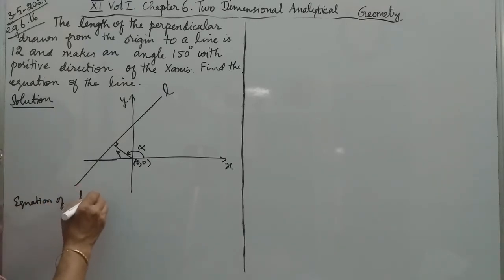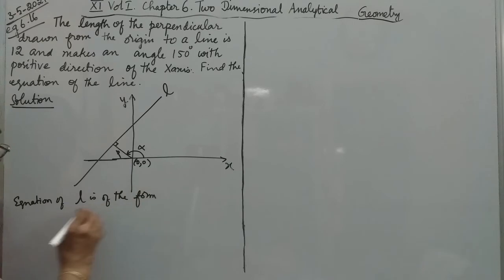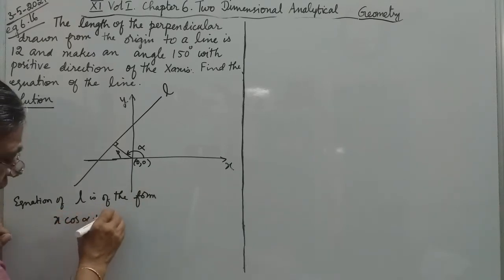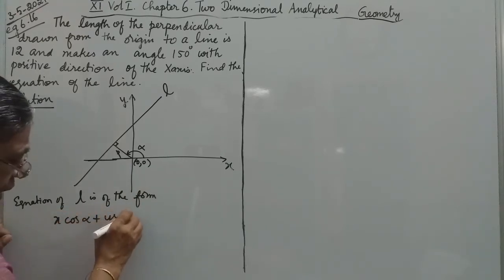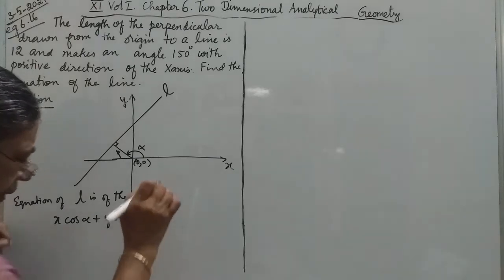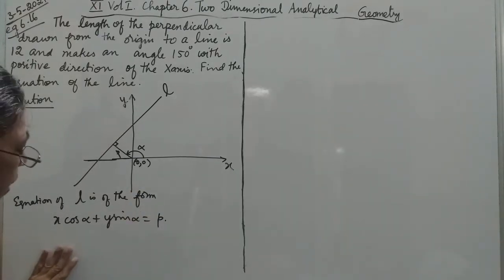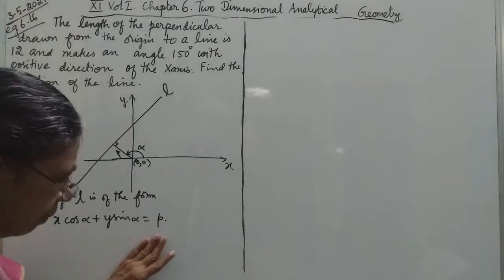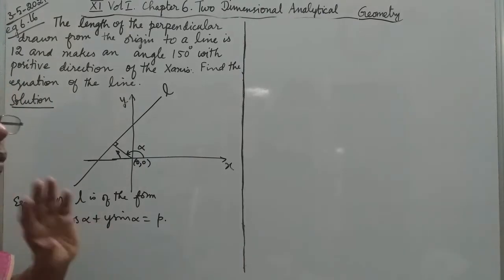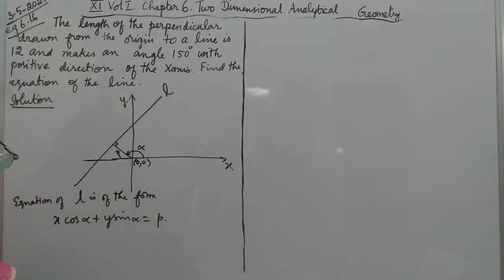The equation is of the form: x·cos α + y·sin α = p. So, x·cos α + y·sin α = p. This is the standard normal form of the equation of a line.